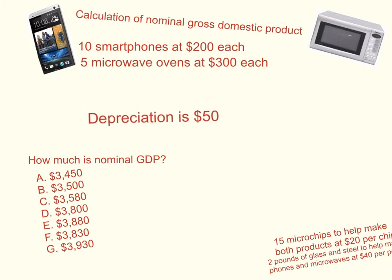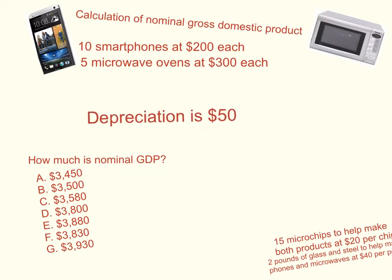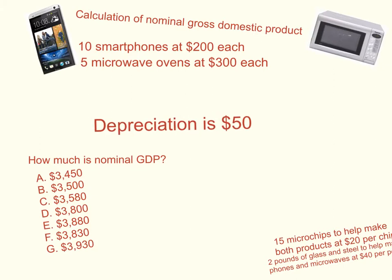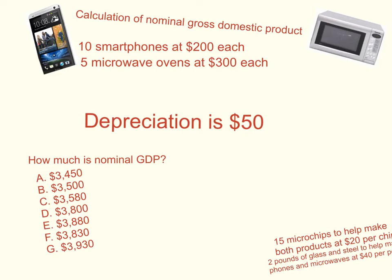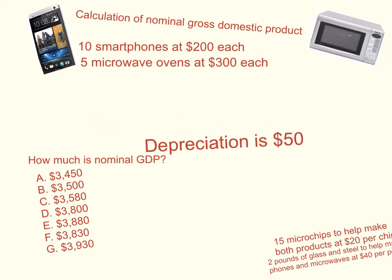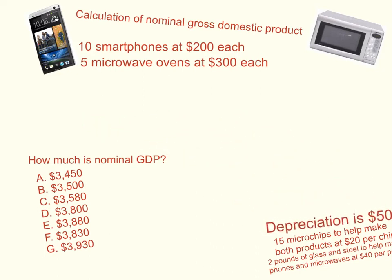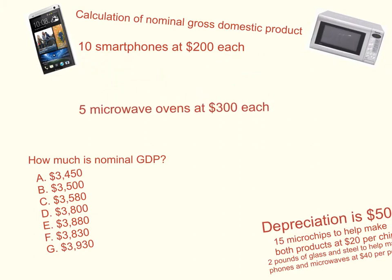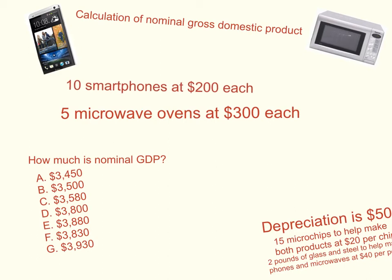Depreciation. What we are doing with the smartphones and the microwave ovens, we are using the expenditure approach. Depreciation is really a component in the income approach. If you remember from the textbook, the income approach involves six components: wages, interest, rent, profit, indirect business taxes, and depreciation. But we do not have those income components — wages, interest, rent — so we can't use that approach. So right now depreciation is really irrelevant, and it just leaves us using the expenditure approach with the value of the smartphones and the microwave ovens.